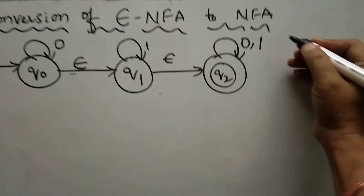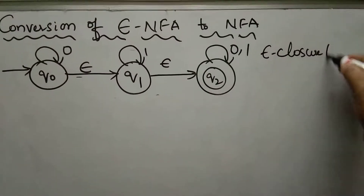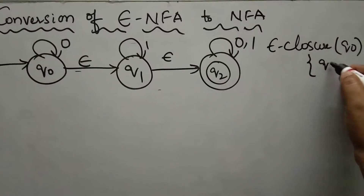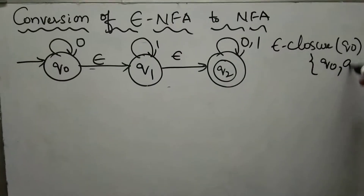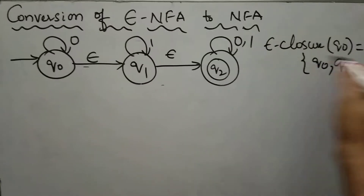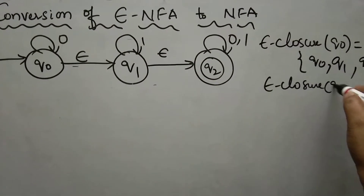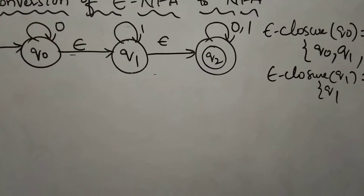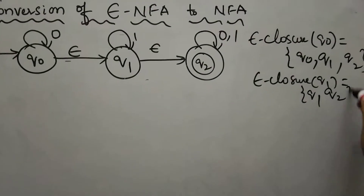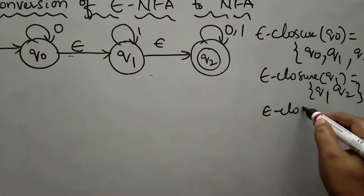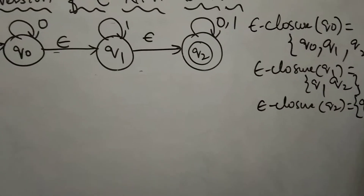First, you have to convert the epsilon closure of each state. Epsilon closure of Q0 includes Q0, and from Q0 via epsilon we reach Q1, and from Q1 we reach Q2. Similarly, epsilon closure of Q1 includes Q1, and from Q1 via epsilon we reach Q2. Epsilon closure of Q2 is simply Q2.